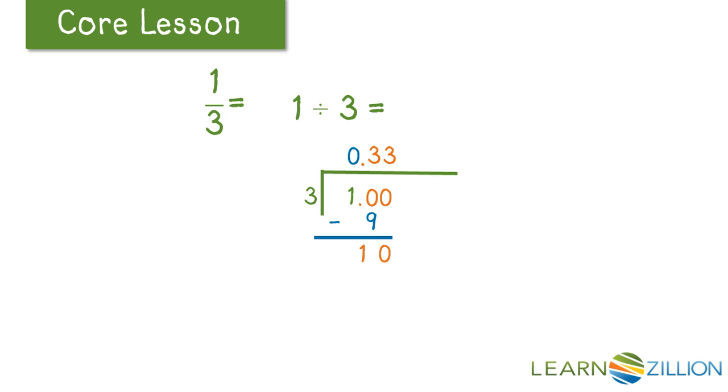Three goes into ten. We have a remainder of one. We add another zero. Zero comes down. Three goes into ten. We have a remainder of one. And at this point, we start to see the pattern develop.